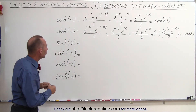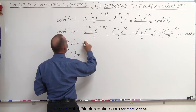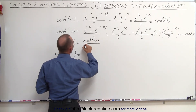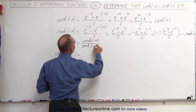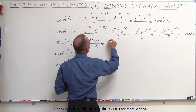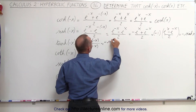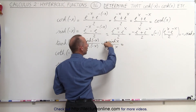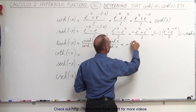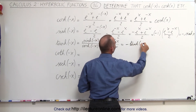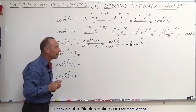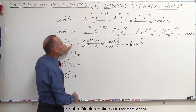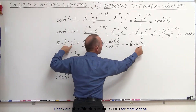For the hyperbolic tangent of minus x, since we know that the hyperbolic tangent is equal to the hyperbolic sine of minus x divided by the hyperbolic cosine of minus x, and we know that this is equal to the negative of the hyperbolic sine of x divided by the hyperbolic cosine of x, this becomes the negative of the hyperbolic tangent of x. Since the hyperbolic tangent is an odd function, when we plug in a minus x, that's the same as the negative when we plug in an x.